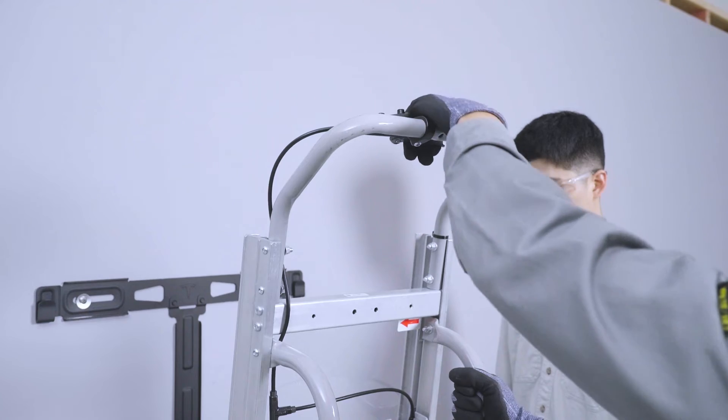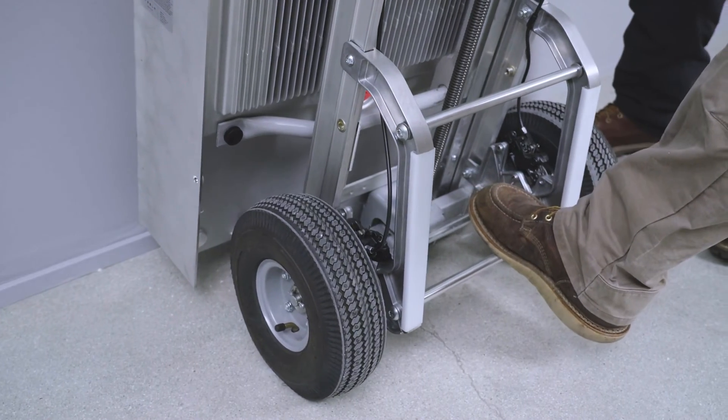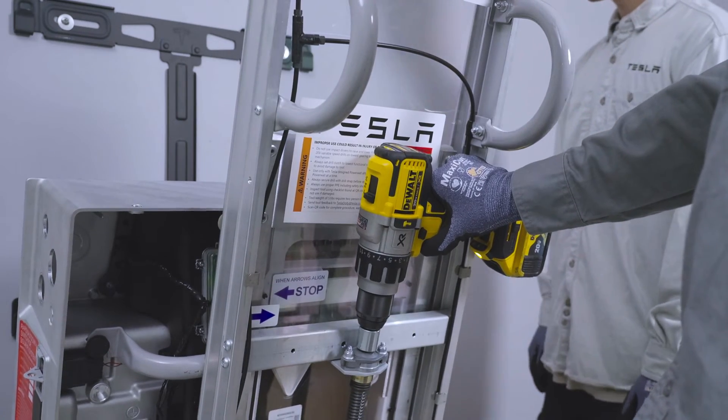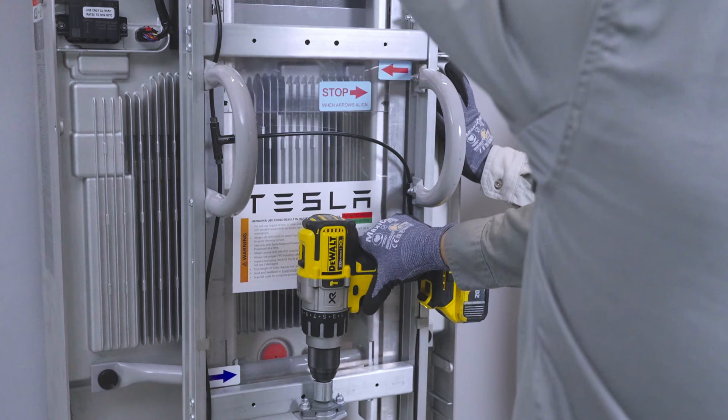Engage the brake and slightly tilt the Dolly backward. Use the drill to begin raising the lifting platform. Please note, observe the arrows on the lift to avoid exceeding the Dolly's maximum lifting height.